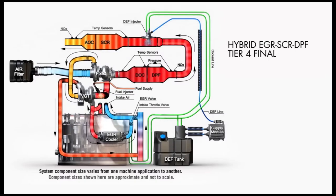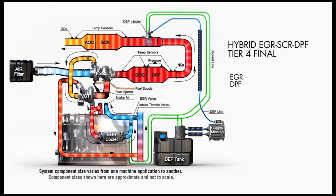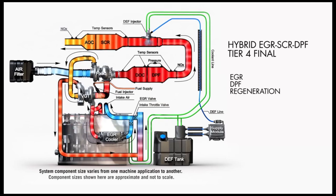To meet Tier 4 final requirements, other forestry equipment manufacturers will use a hybrid system that combines EGR components, a diesel particulate filter, a regeneration system, and a complete SCR system.